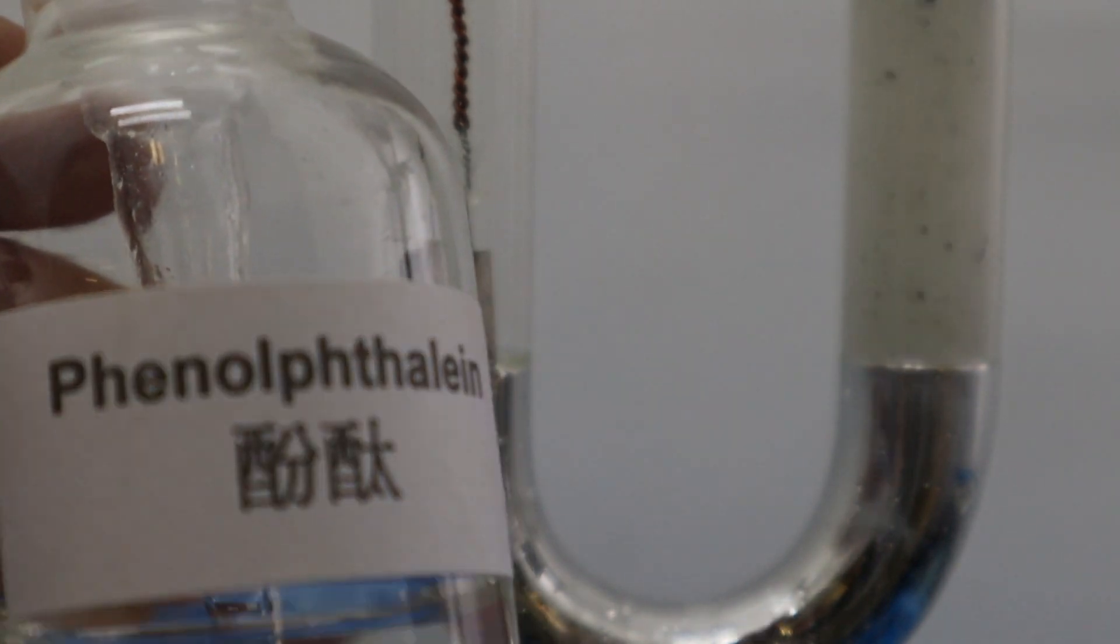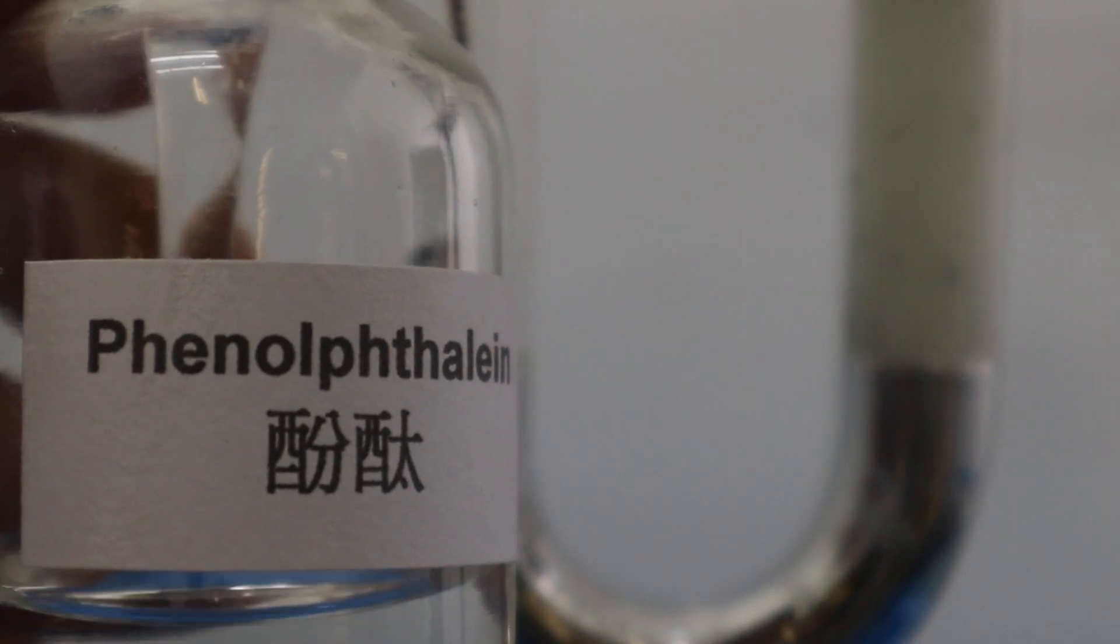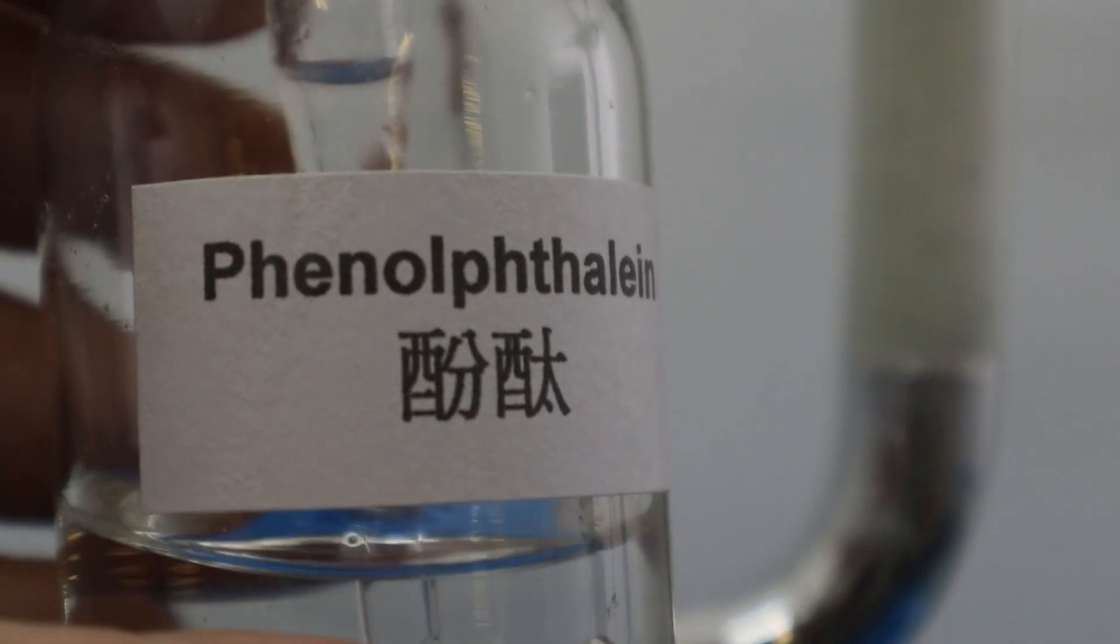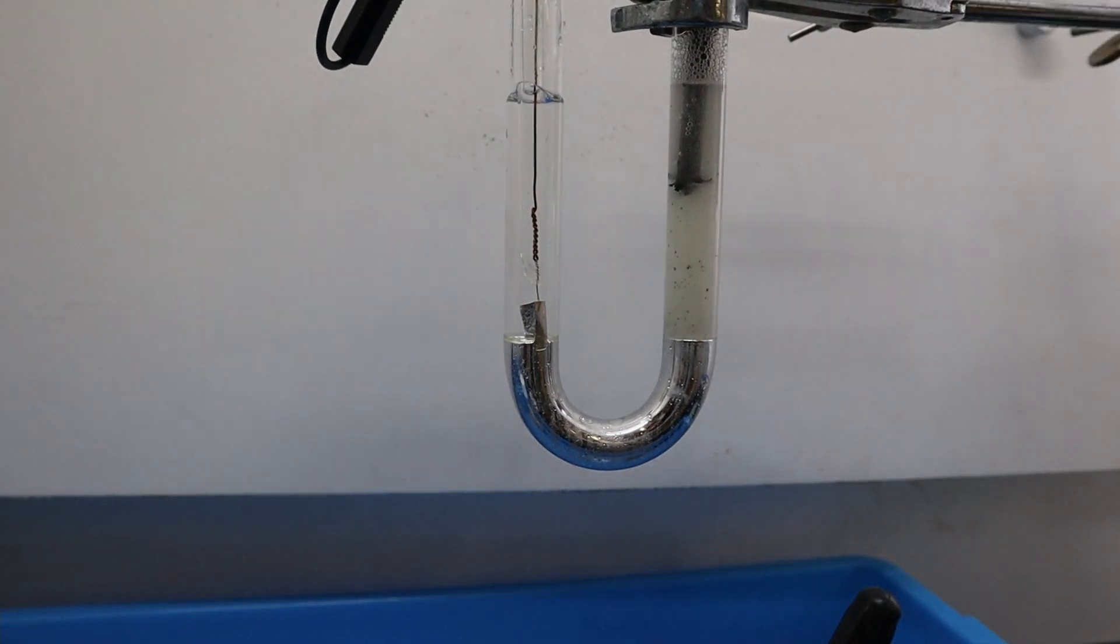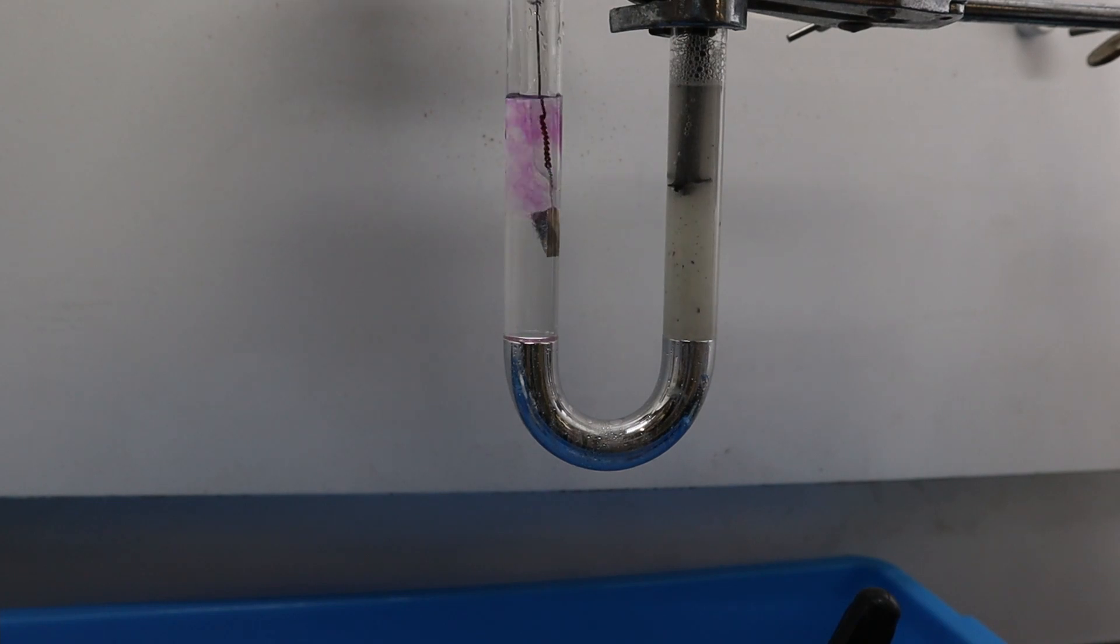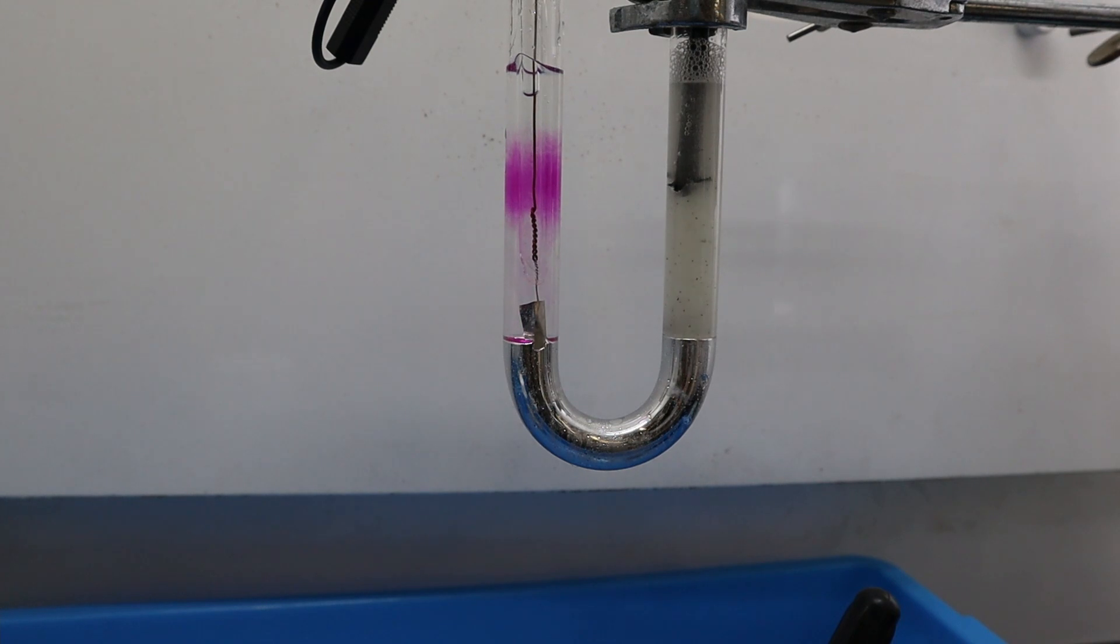Finally, I add phenolphthalein to the deionized water to test for sodium hydroxide. A pink color is seen. This proves that an alkali solution is formed. That is sodium hydroxide solution.